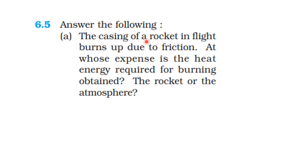The rocket is flying because it has fuel which it ejects. For every action there is an equal and opposite reaction, so the rocket flies forward. The casing of a rocket in flight burns up due to friction with the atmosphere.